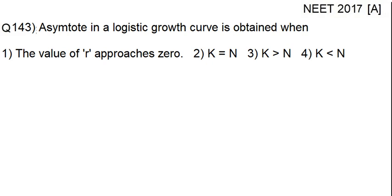The question is, asymptote in a logistic growth curve is obtained when: the value of R approaches zero, K is equal to N is the second option, K is greater than N third option, K is less than N that is the fourth option.